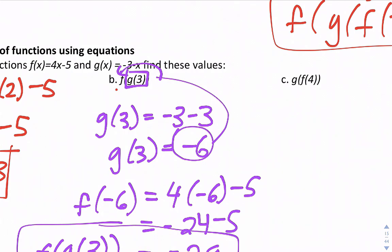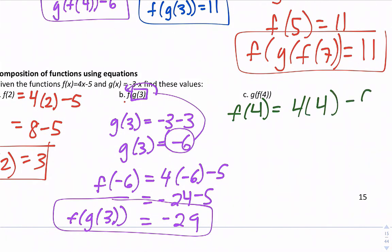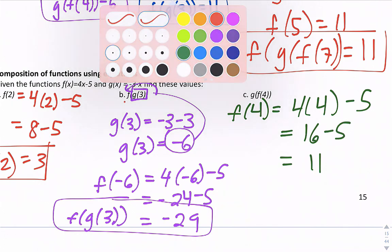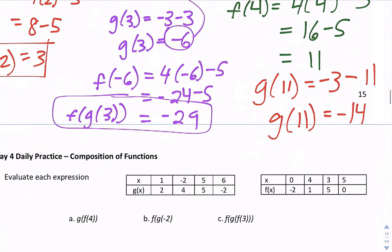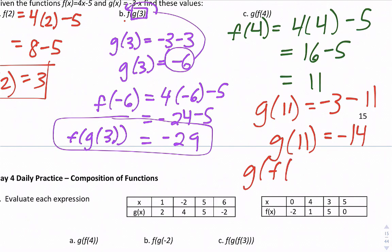Last one: g(f(4)). Start with f(4) = 4(4) − 5 = 16 − 5 = 11. Now find g(11): plug in to get −3(11) = ... the result is −3 − 11 = −14. So g(f(4)) = −14.